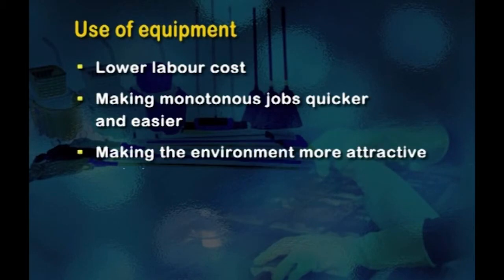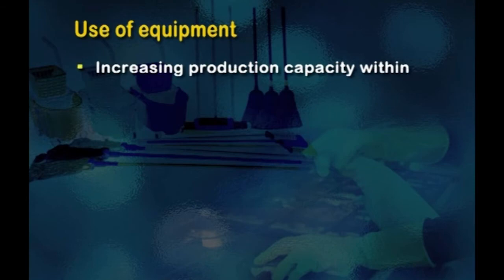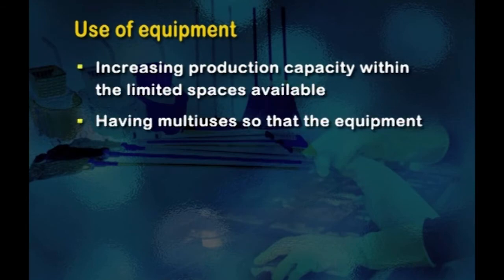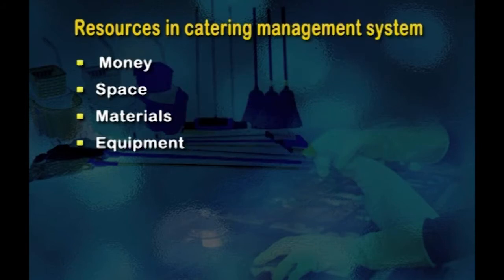The fourth resource is equipment. The important factor to be considered when investing in equipment is to ensure that its installation and utility outweigh the cost of labor which would be required to do the job if the equipment was not installed. For maximum use of equipment, its selection must be made on the basis of lower labor cost, making monotonous jobs quicker and easier, making the environment more attractive and clean, higher staff morale, increasing production capacity within limited spaces, and having multi-uses so that the equipment does not lie idle for a long period of time.